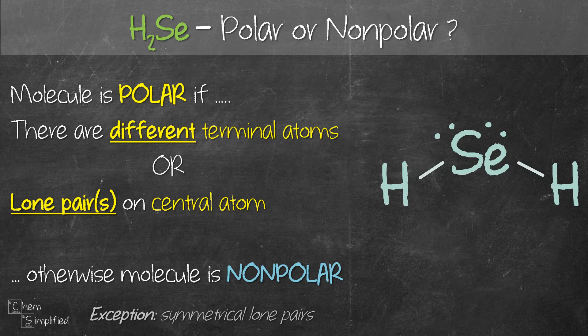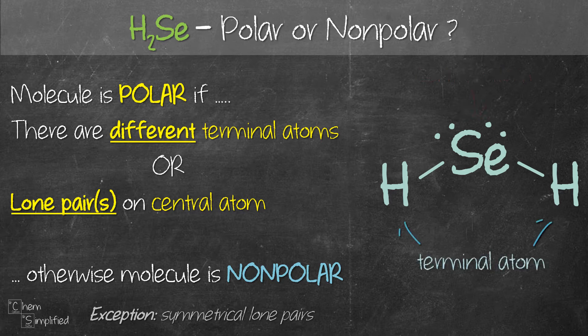Looking at the Lewis structure on the right-hand side, selenium (Se) is the central atom because it's located in the center of the molecule. It's surrounded by hydrogens, so hydrogens are the terminal atoms. We have two terminal atoms in this molecule and both of them are hydrogen — they are the same. So the first criteria is not fulfilled.